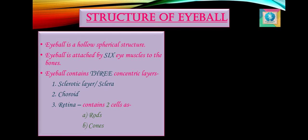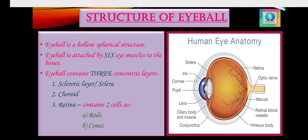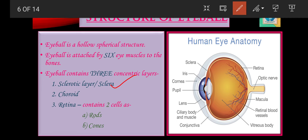Structure of an eyeball: the adult eyeball is a hollow spherical structure. Out of the total surface area, only the front one-sixth remains exposed. The rest of the eyeball is embedded in a bony socket. Six eye muscles attach the eyeball to the bones. The walls of the eyeball are divided into three concentric layers. The first is the sclerotic layer, made up of tough non-elastic fibrous tissue and white in color. The sclera bulges out and becomes transparent in the front region to form the cornea — the bulging part of the eye.